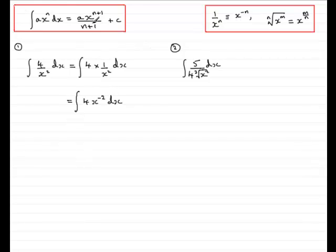So you can see that we've got this now in this format. A is the 4 and n is the power minus 2. So according to this rule, all we need to do is add 1 to the power and divide by the new power. So we get 4, our a value, times x to the minus 1 divided by minus 1, plus c.